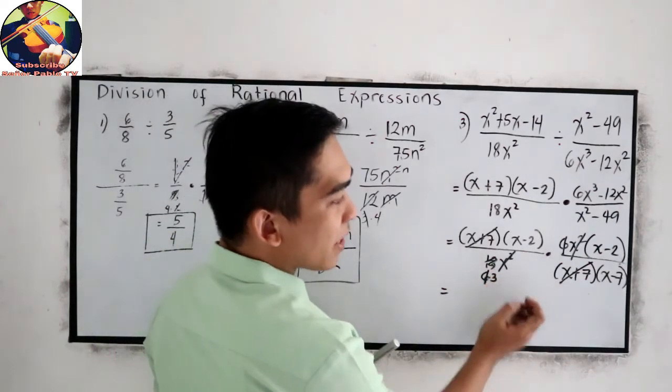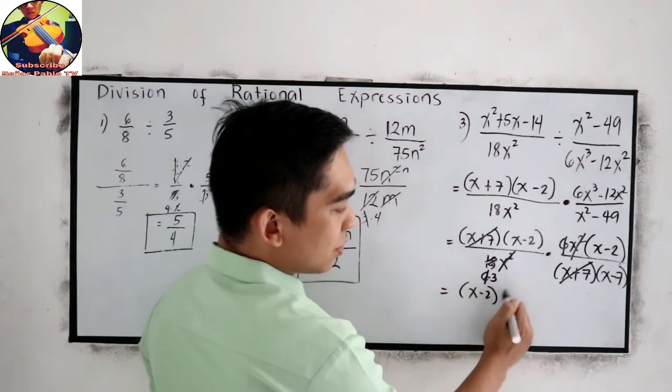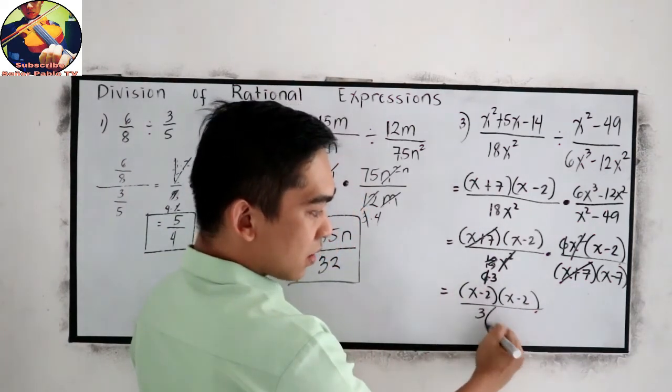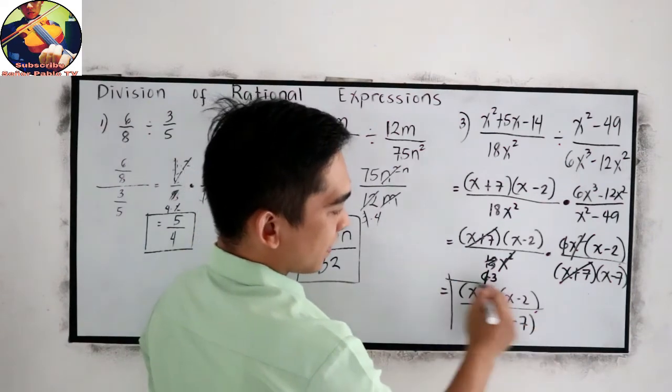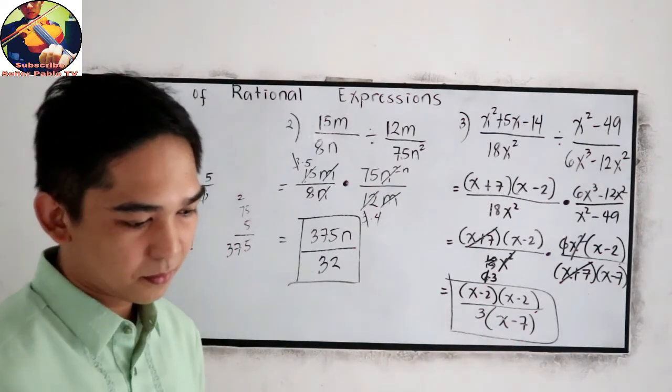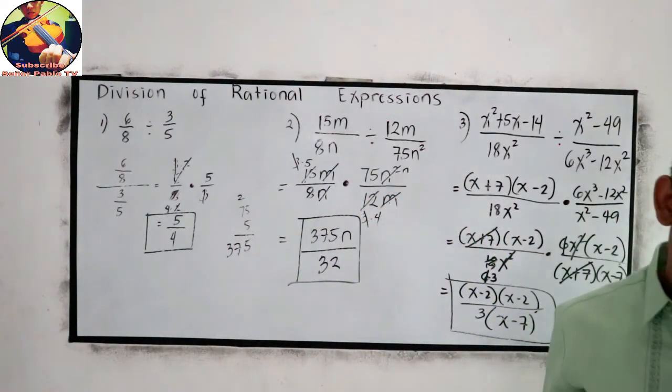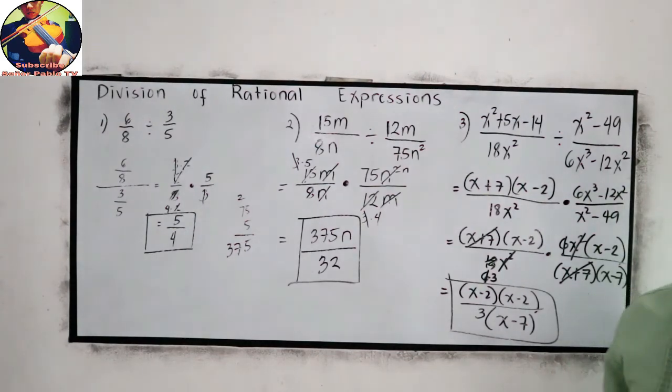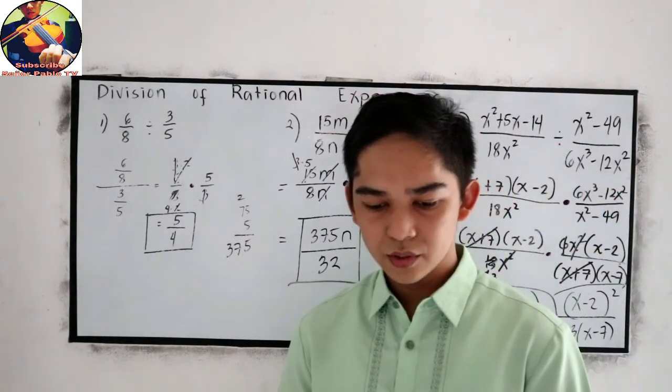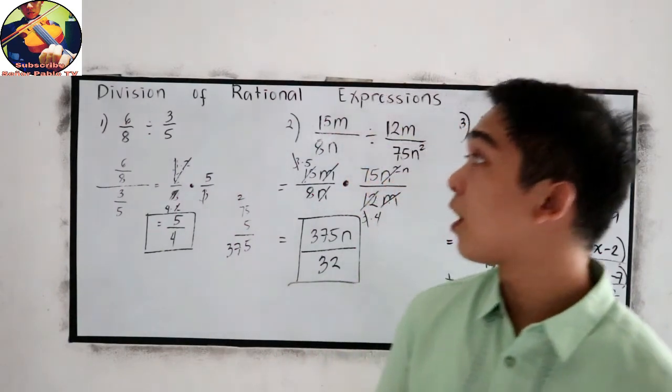Now, the remaining expressions in our numerator are x minus 2, x minus 2. And for our denominator, we have 3 times x minus 7. This is now our final answer. Or it can be written as x minus 2 squared all over 3 times x minus 7. That is how to solve division of rational expressions.